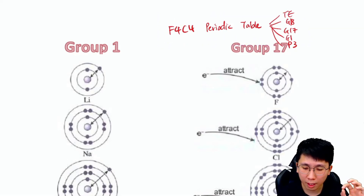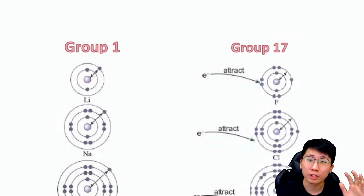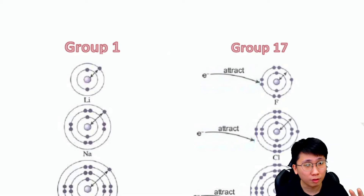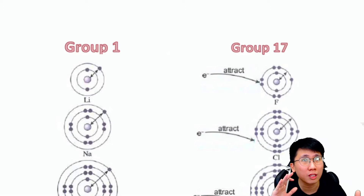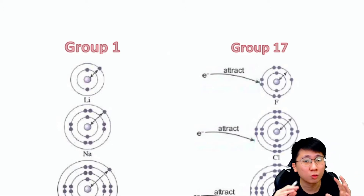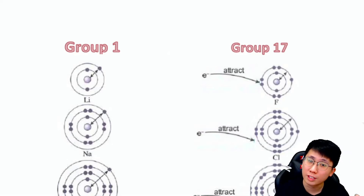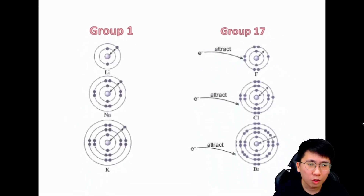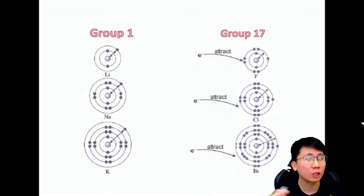For today's video, it's just a brief revision — a recap on what we learned in Form 4 Chapter 4 — specifically Group 1 and Group 17, because these two groups are very common in SPM. The exam always asks about the difference between Group 1 and Group 17, and students always get confused comparing them.